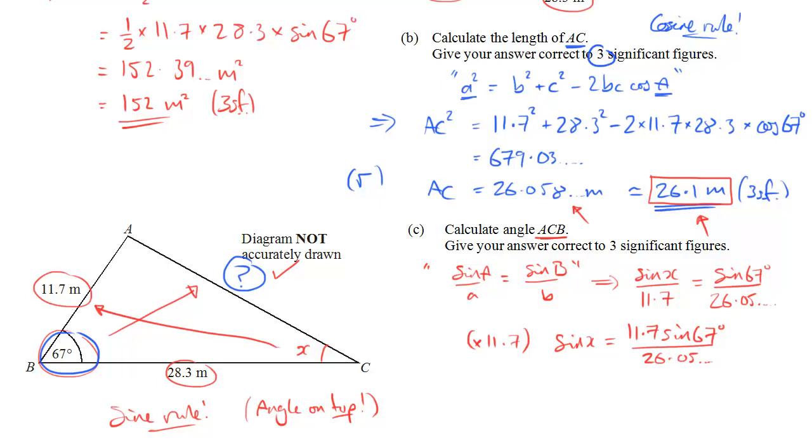And now it's like before, if you want to find the angle, you have to use the inverse function, sine to the minus 1, or shift sine as it would be on your calculator. So sine to the minus 1 of all of that, 11.7 sine 67 over 26. Use the ANS key for that part. Shove it all in the calculator, and we get 24.4 degrees.